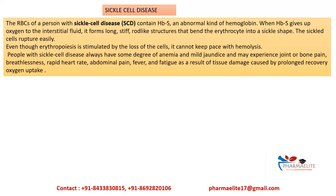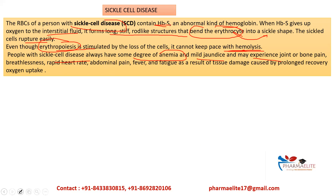Next is sickle cell disease. The RBCs of a person with sickle cell disease contain HbS — an abnormal kind of hemoglobin. When HbS gives up oxygen to the interstitial fluid, it forms long, rod-like structures that bend the erythrocyte into a sickle shape. These sickle cells rupture easily, and even though erythropoiesis is stimulated, it cannot keep pace with the rapid hemolysis. People with sickle cell disease always have some degree of anemia and mild jaundice, and may experience joint or bone pain, breathlessness, rapid heart rate, abdominal pain, fever, and fatigue.